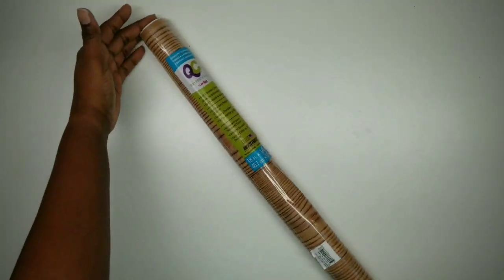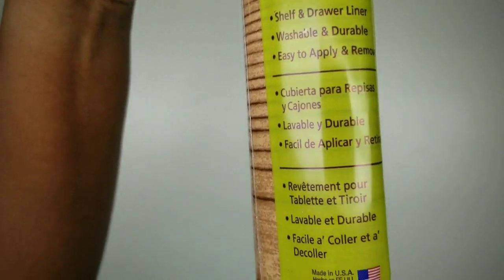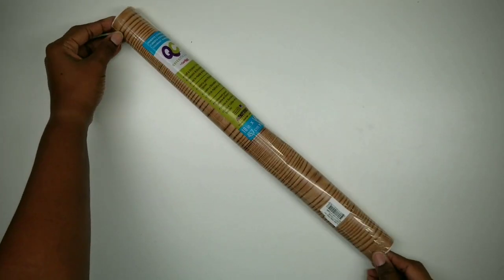You will need one roll of this wood designed peel and stick shelf liner. This comes in a length of 18 inches by 54 inches long. You will also need a foam core board that you will be adhering your wood planks to.